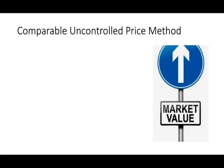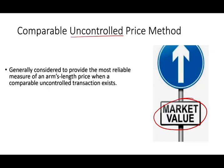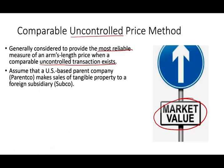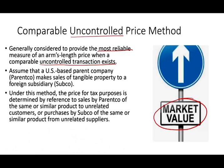Let's start to talk about the comparable uncontrolled price method. Think of this method as looking at market value — comparable means you could compare it to something else, uncontrolled means somebody you don't control. What would they charge? That's what we're looking at. This method is generally considered the most reliable measure of an arm length price when a comparable uncontrolled transaction exists. Assume a U.S. based parent company P makes a sale of tangible property to a subsidiary. Under this method, the price for tax purposes is determined by reference to sales by P of the same or similar product to unrelated customers.